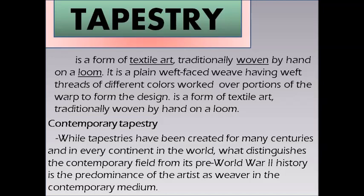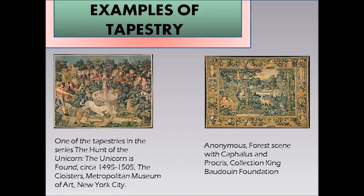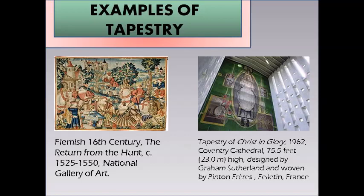Examples of tapestry include: The Unicorn is Found, circa 1495–1505, from the series The Hunt of the Unicorn, at the Cloisters, Metropolitan Museum of Art, New York City; an anonymous forest scene with Cephalus and Procris; The Return from the Hunt, circa 1525–1550, at the National Gallery of Art; and the Tapestry of Christ in Glory, 1962, at Coventry Cathedral, 75.5 feet (23 meters) high, designed by Graham Sutherland and woven by Pinton Frères, France.